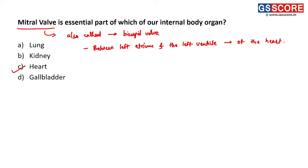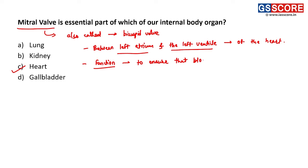The mitral valve is the valve between the left atrium and the left ventricle of the heart. Its function is to ensure that blood flows in the right direction. That is the function of the mitral valve — it is an essential part of the human heart.